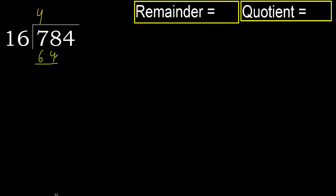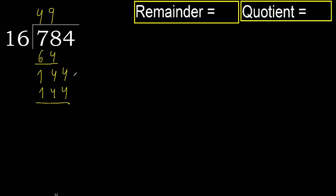78 minus 64 is 14. Bring down the next digit: 144. 16 multiplied by 9 is 144, which is not greater. Subtract — remainder is 0. There is no next digit, therefore we finish.